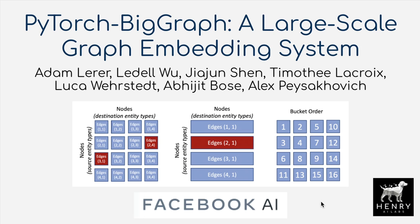This is different from GPT-3 or Siamese BERT and the way that they learn vector representations of text data or entity types, compared to using the graph structure in order to compute these vector representations based on having distance metrics between the theta representations of source and destination nodes that share an edge in the graph.